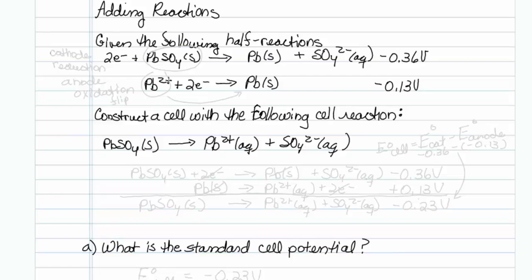This is how to add reactions and determine a number of things about that reaction. I'm given two half-reactions. One involves lead sulfate being reduced to lead solid and sulfate. The other involves lead two-plus plus two electrons going to lead. We'd like to construct a cell with the following cell reaction.